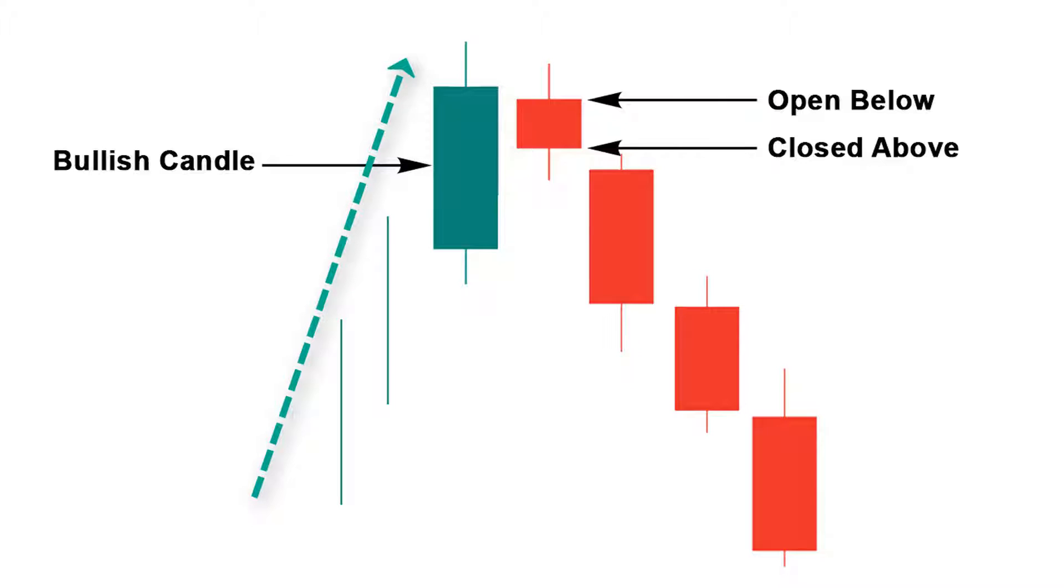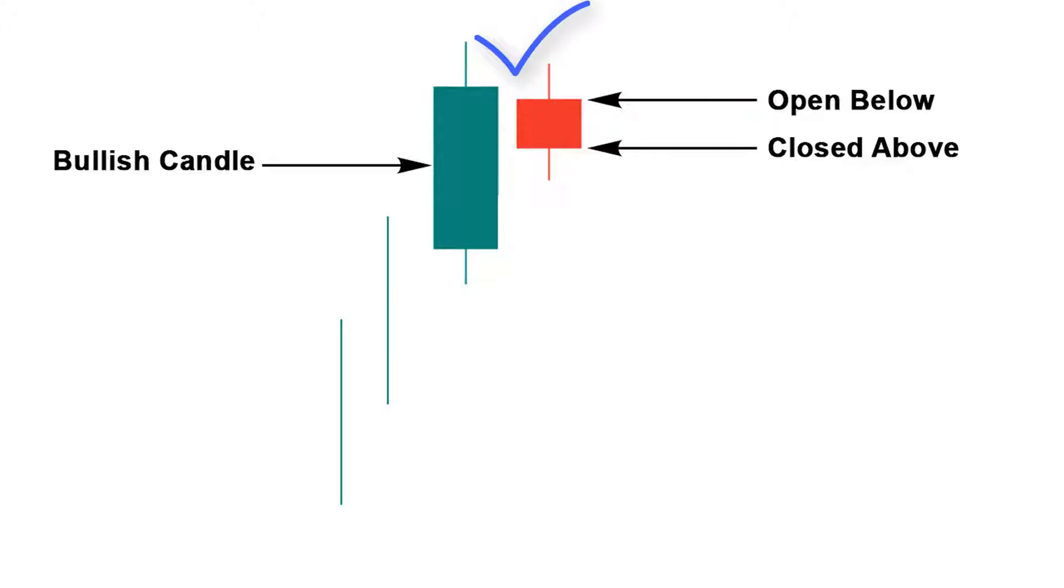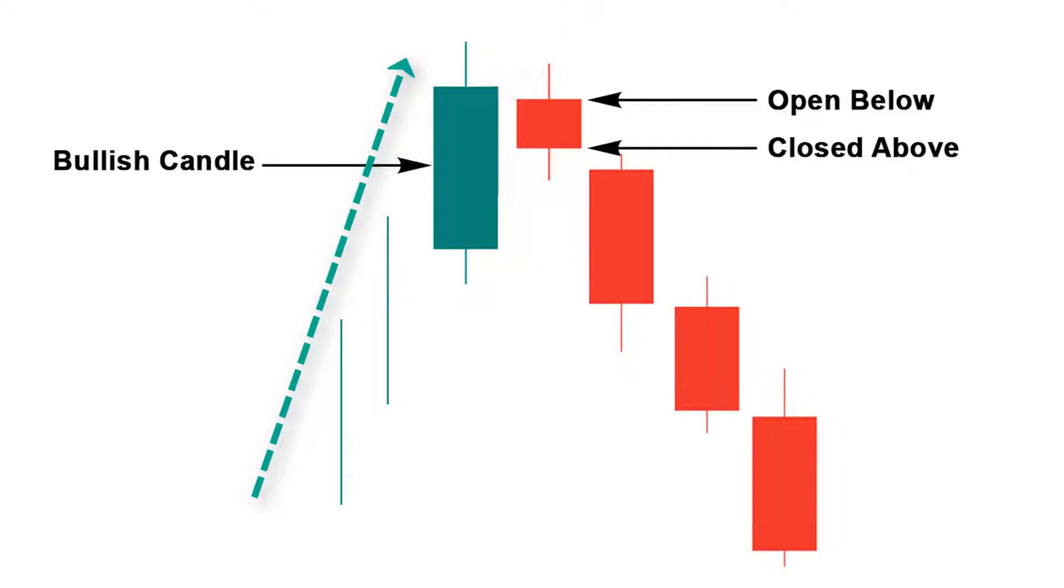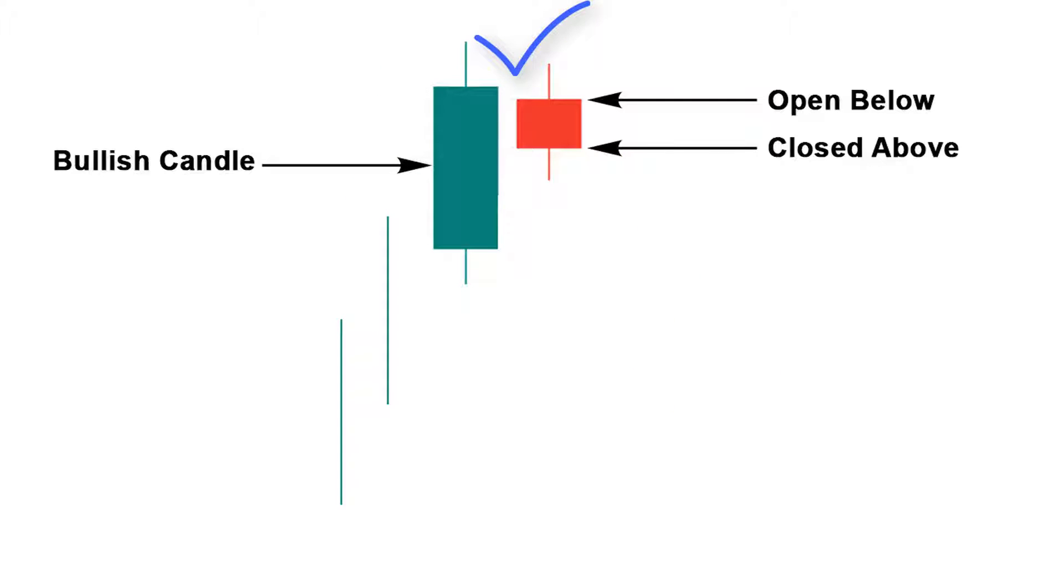But all bearish harami candlestick patterns cannot convert an uptrend into a downtrend. Only a 100% perfect bearish harami pattern can turn an uptrend into a downtrend. Today we will learn how to recognize the 100% perfect bearish harami candlestick pattern. So let's get started.